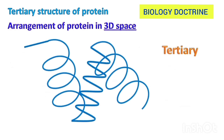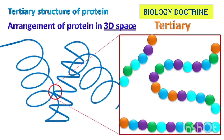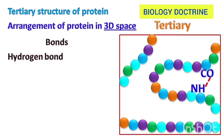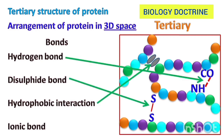The alpha helices and beta-pleated sheets combine and bend to form the tertiary structure — a 3D globular structure. This is maintained by hydrogen bonds, disulfide bonds, hydrophobic interactions, and ionic bonds. In the diagram you can see where each bond is located. These are the bonds that maintain the 3D structure, and these are functional proteins at the tertiary structure level.